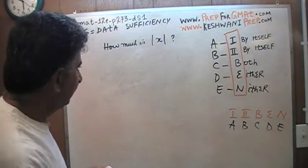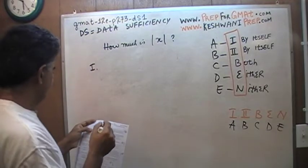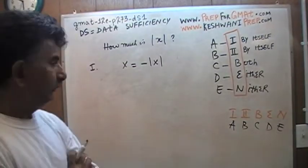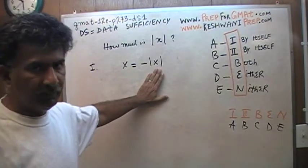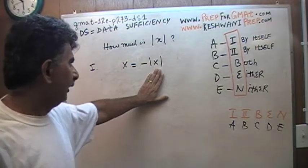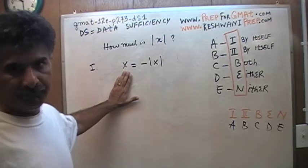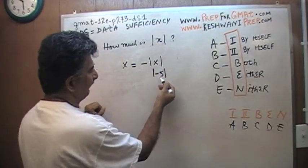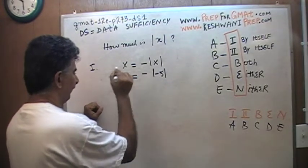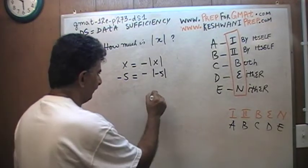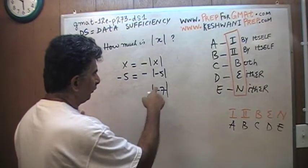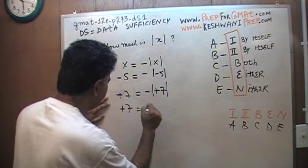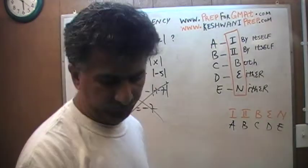Statement one says x equals negative of absolute value of x. We know that absolute value of any number is positive, and it's got a negative in front of it. That tells me that x, whatever it is, is a negative number. For example, it could be negative 5. X cannot be positive. If x were positive 7, absolute value is 7, with a negative in front, we'd end up saying positive 7 equals negative 7, which doesn't work.